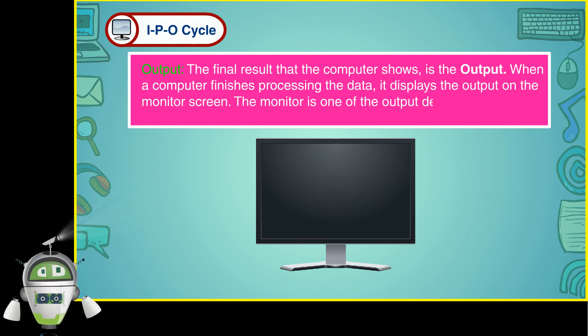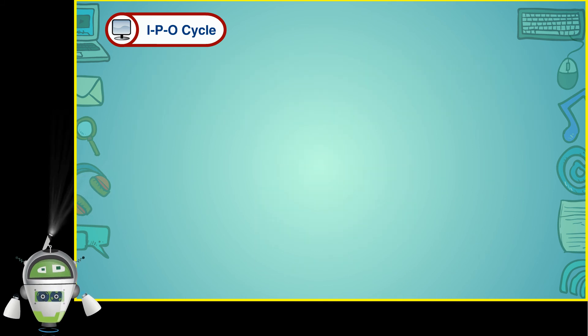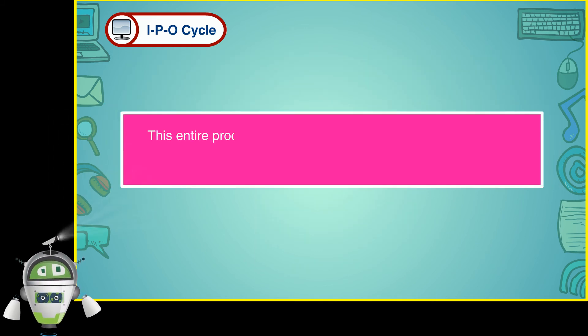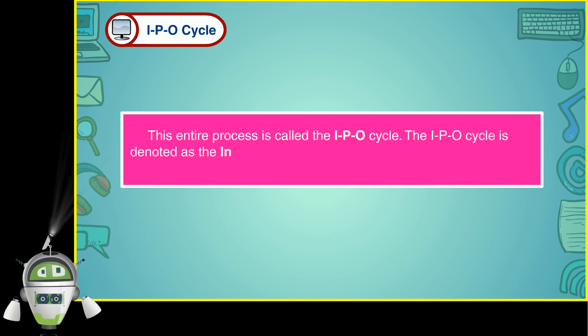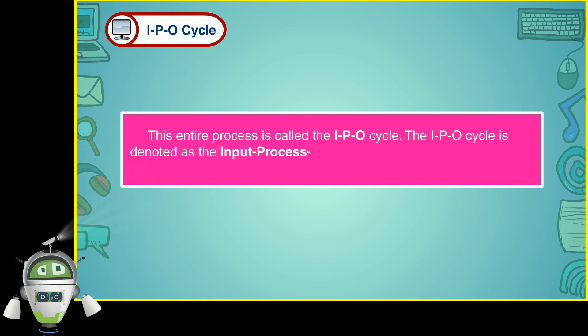The monitor is one of the output devices. This entire process is called the IPO cycle. The IPO cycle is denoted as the input-process-output cycle. All the machines follow the IPO cycle.